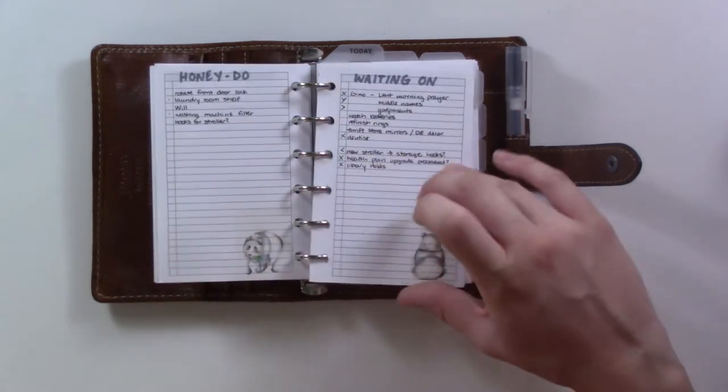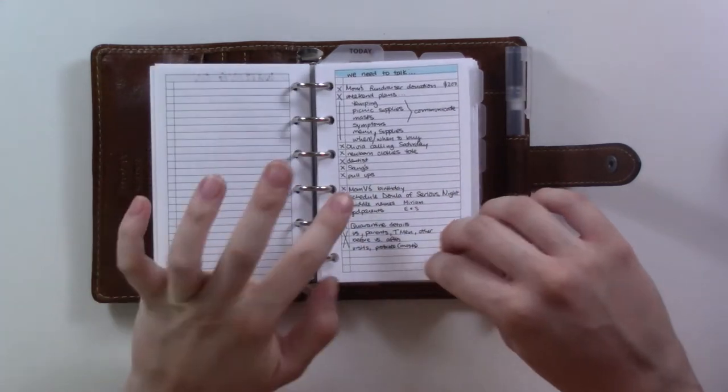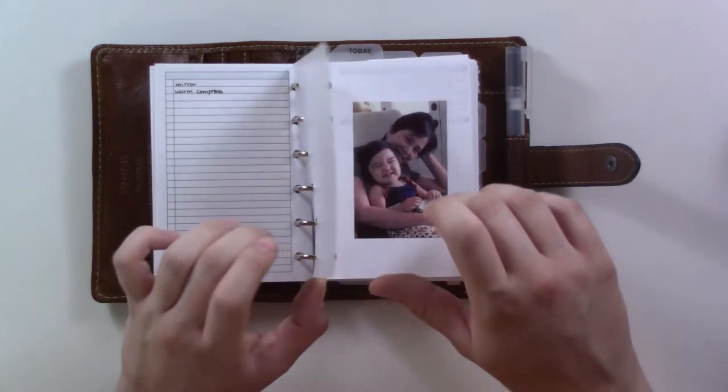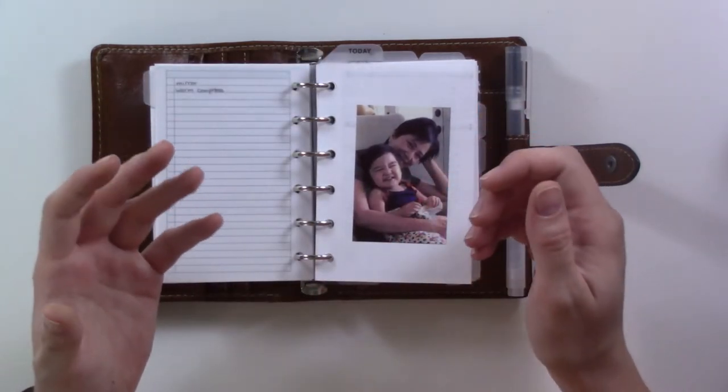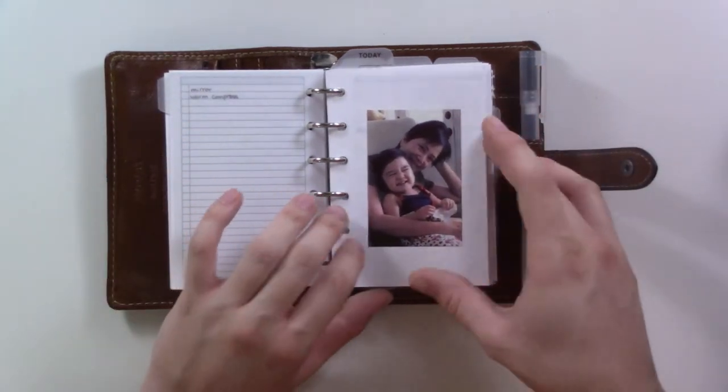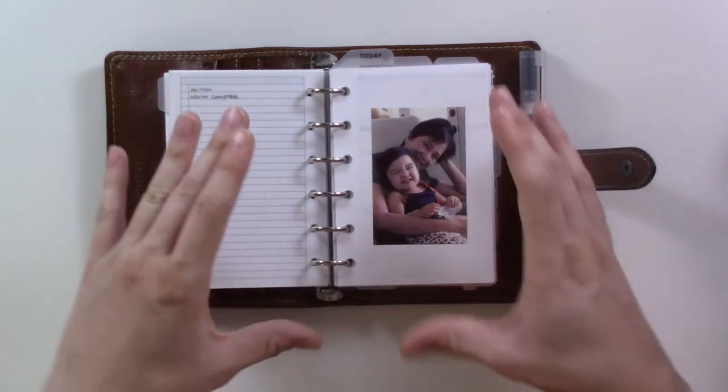Someday-maybe, waiting-on, honey-do list. This is just a list of things that I need to talk to my husband about, so when I have an opportunity to sit down and have a conversation, I pull that out and say, 'Oh okay, this is something I forgot I needed to mention to you.'